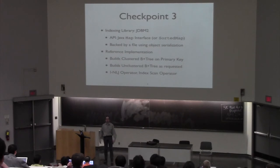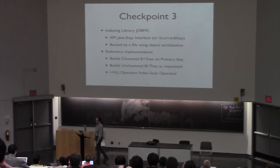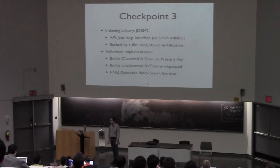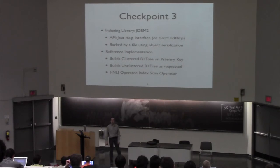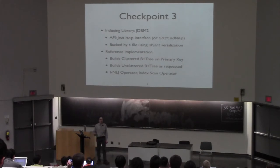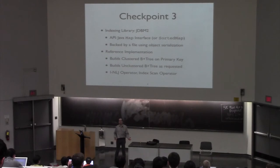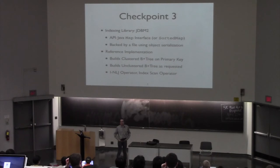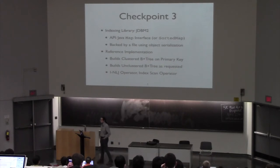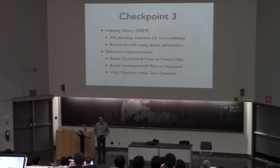From a really high level, let's take a look at what's different in Checkpoint 3. The first is that you now have access to an open source indexing library, JDBM2. If you're familiar with Berkeley DB, it's essentially the same basic concept. The basic idea is that you have a map — an implementation of the map interface — and an implementation of the sorted map interface that is backed by a file on disk, a B-plus tree or a hash map specifically. This is done using object serialization, so while it may not be the most efficient approach, it should be relatively easy to use and reasonably efficient for the scale of data we're working with.